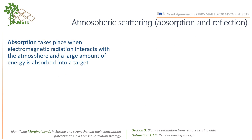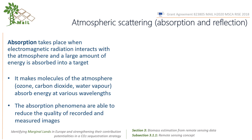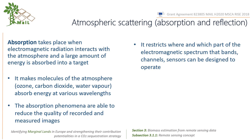Absorption takes place when electromagnetic radiation interacts with the atmosphere and a large amount of energy is absorbed into a target. It makes molecules of the atmosphere absorb energy at various wavelengths. The absorption phenomena are able to reduce the quality of recorded and measured images, and they restrict where and which part of the electromagnetic spectrum that bands, channels, and sensors can be designed to operate — and hence the atmospheric window serves as the medium for this.